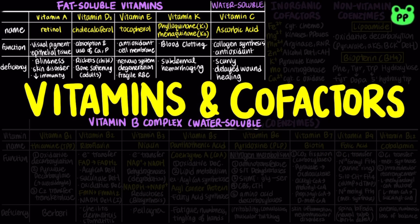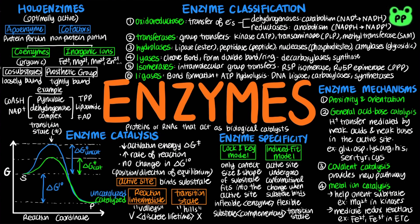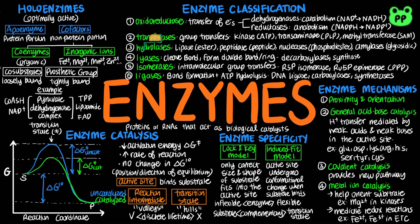The vitamin B complex functions as coenzymes, including vitamin B1, 2, 3, 5, 6, 7, 9, and 12. The concept of holoenzyme refers to the optimally active enzyme that consists of the protein portion, the apoenzyme, and the non-protein portion of cofactors. Cofactors can be further classified into organic cofactors known as coenzymes and inorganic anions.